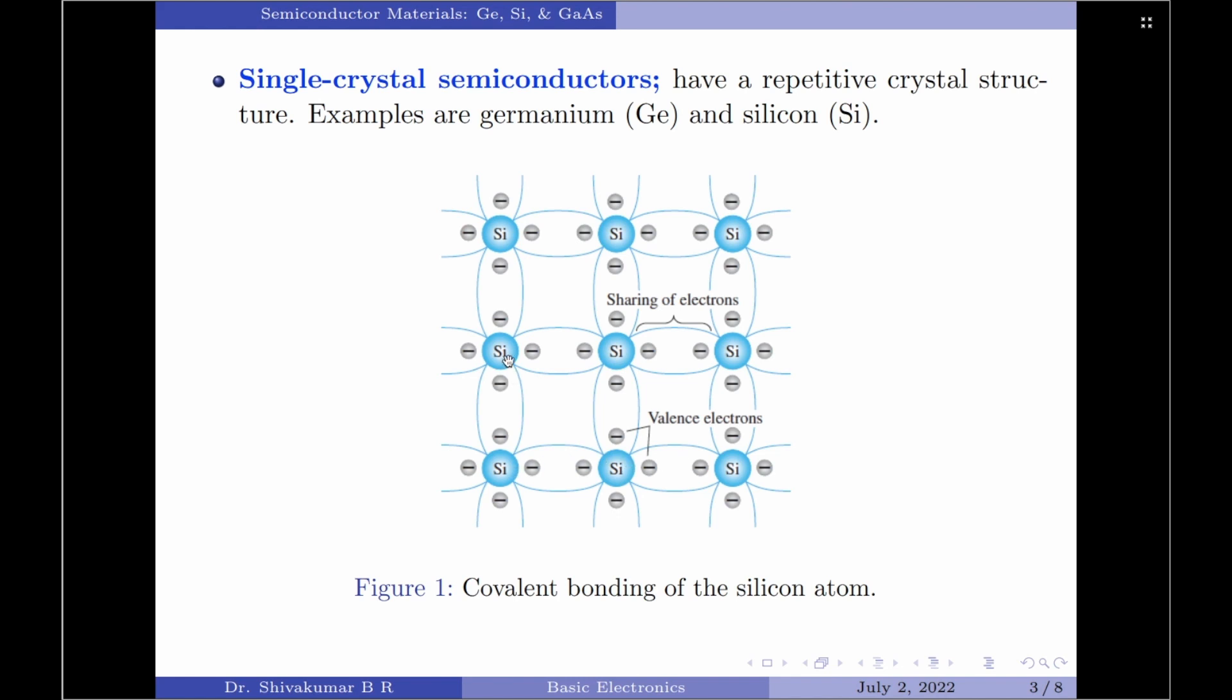This kind of semiconductor is called a single-crystal semiconductor. Examples of single-crystal semiconductors are germanium and silicon. We will discuss about this diagram in more detail in my next video when I discuss covalent bonding.